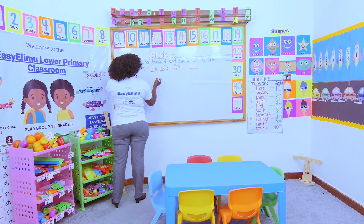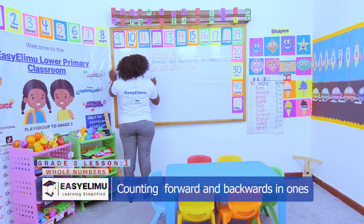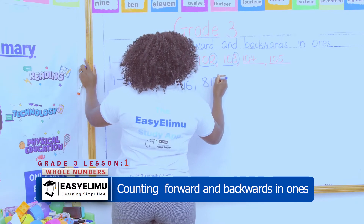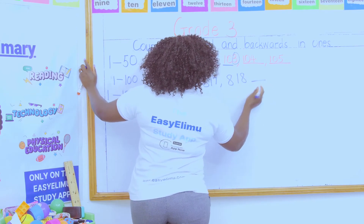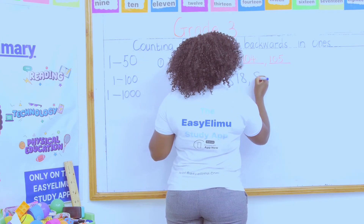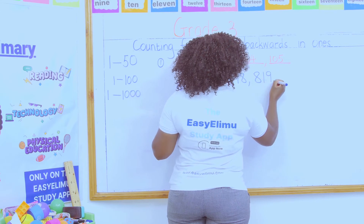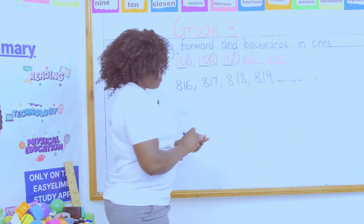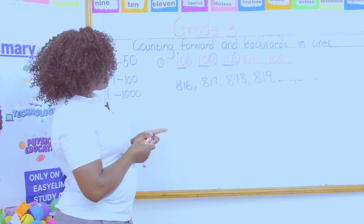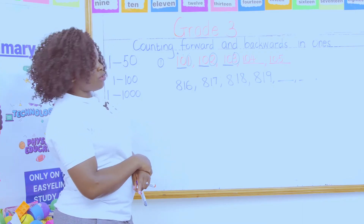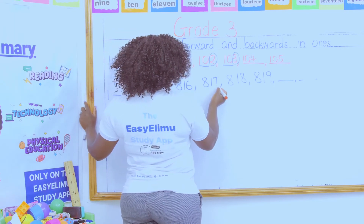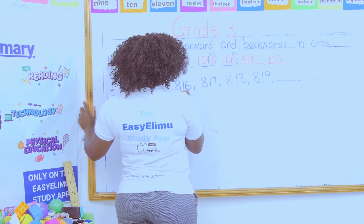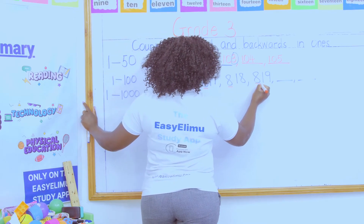What if I've been given a number like this: 816, 817, 818, and 819, and I've been told to fill in the missing numbers? First of all, look at your numbers — which number is common in all the numbers? Is 8 common in all the numbers? Yes! So we have 8, 8, 8, 8.